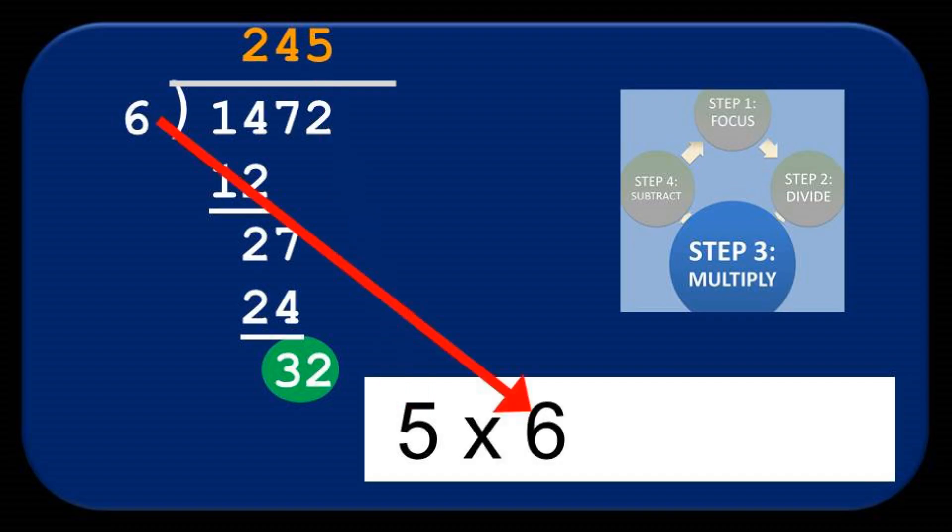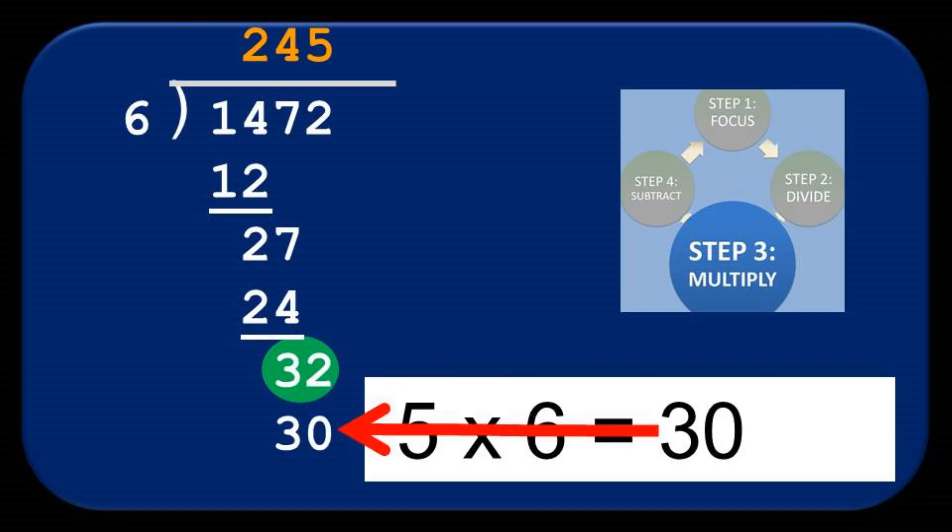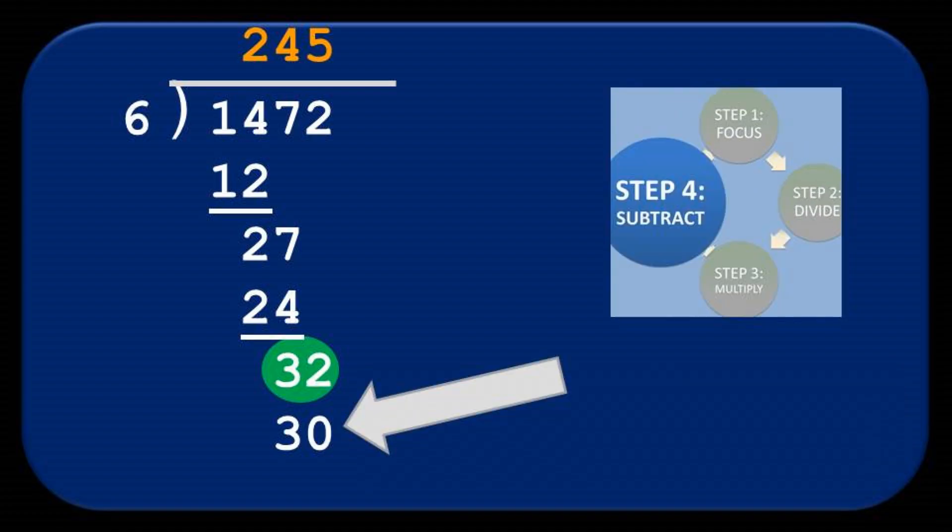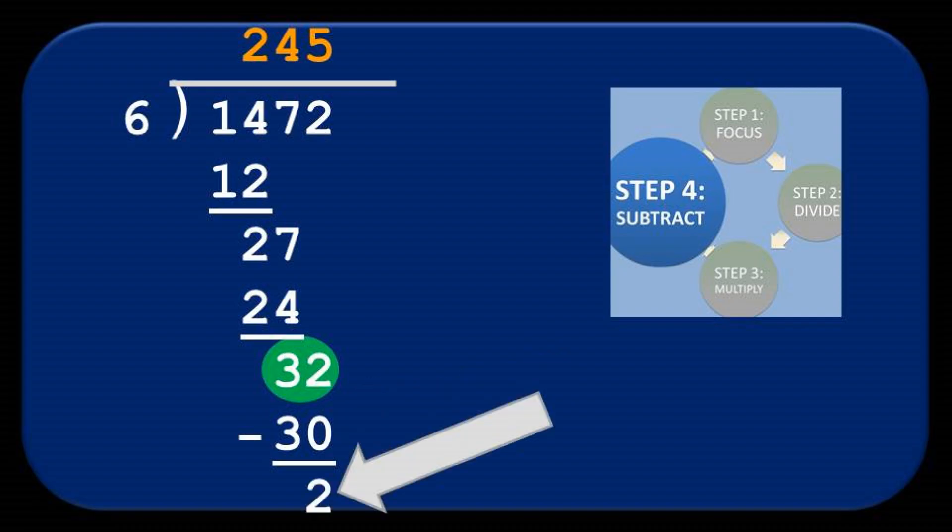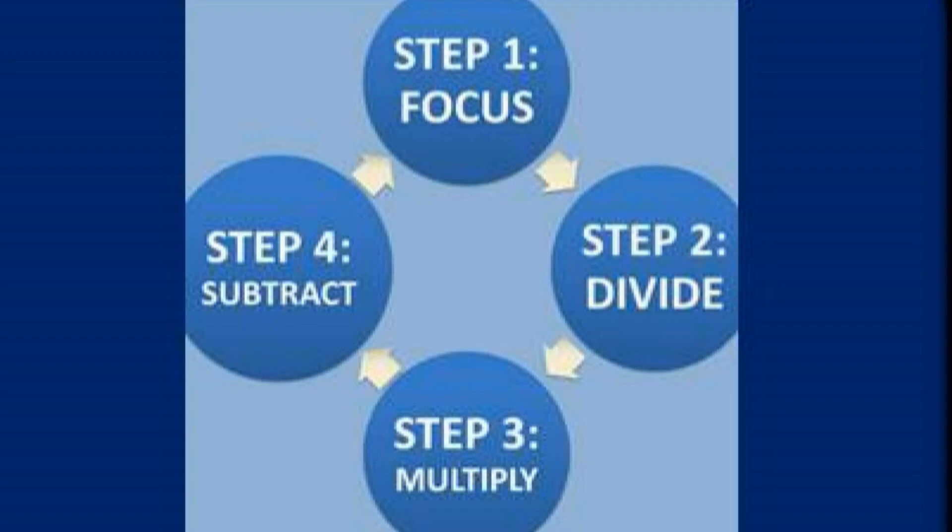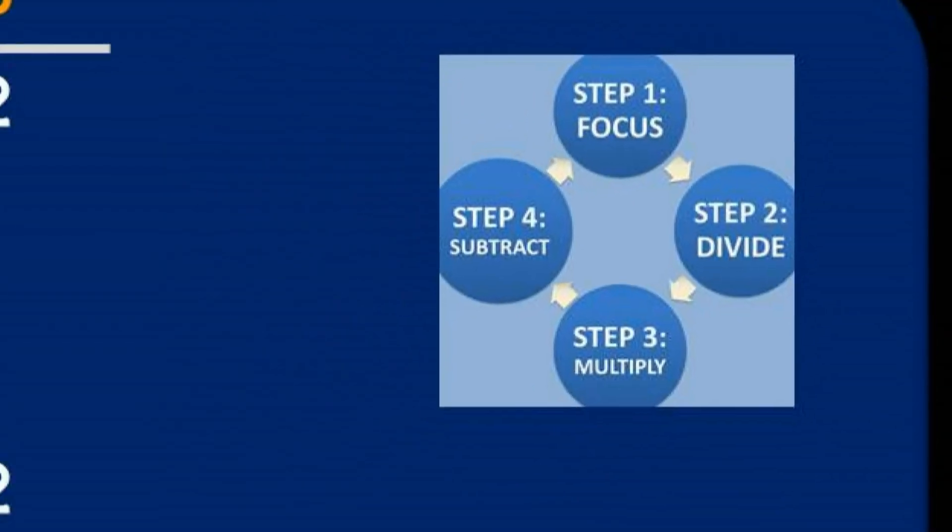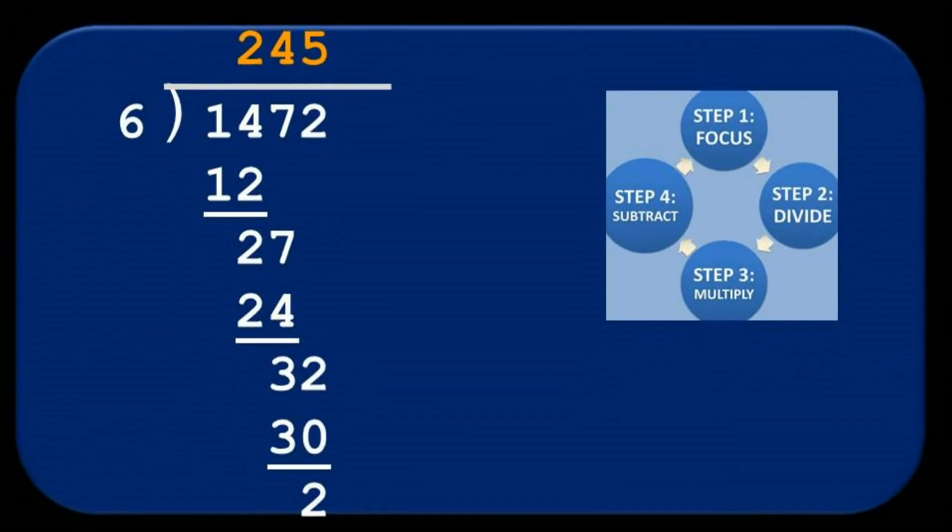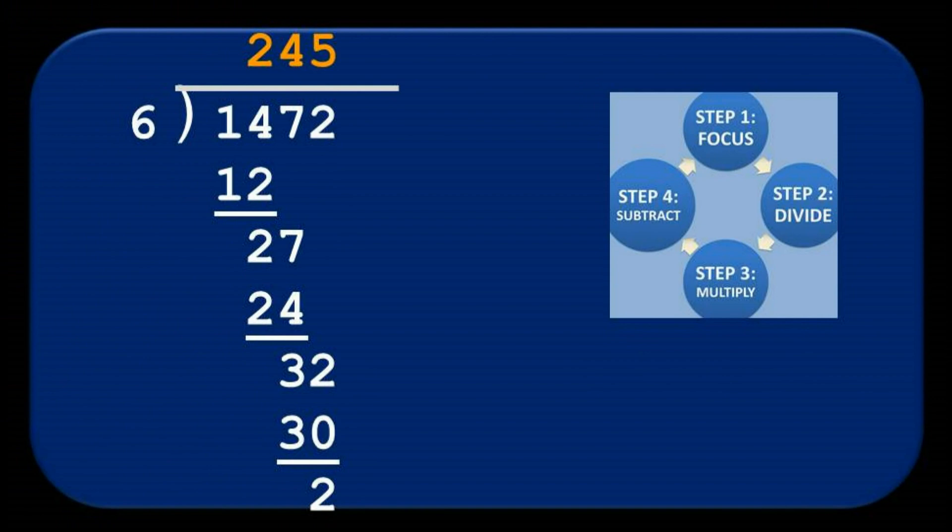5 times 6 equals 30, which we write down underneath the focus. Then, we subtract. 32 minus 30 equals 2. And now, we've run out of digits to pull down from the dividend. We've used them all up, which means we're done repeating the long division cycle. And the 2 that's left at the bottom is our remainder.